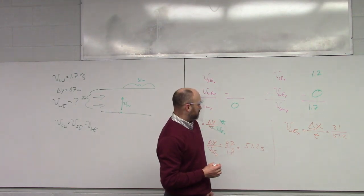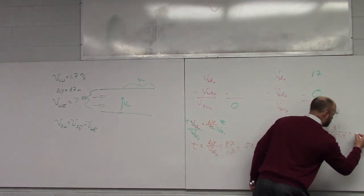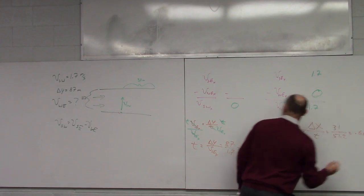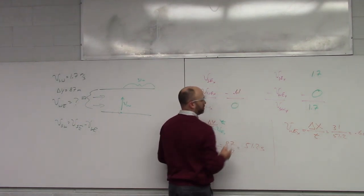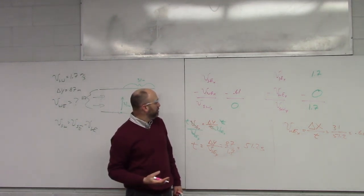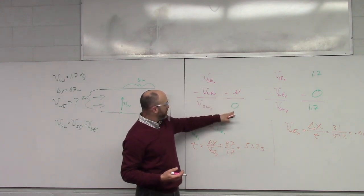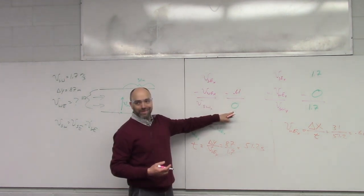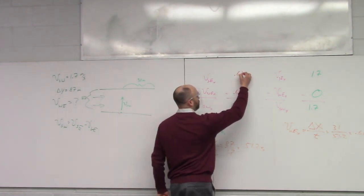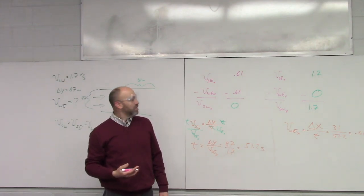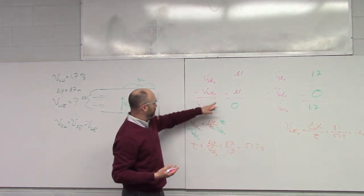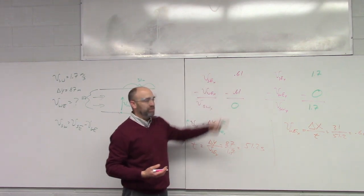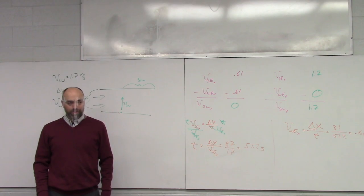We know delta-x from Earth's perspective is 31 m, and we know time is 51.2 s. What velocity is this? The current is pushing her — this is the velocity of water in the x-direction. So water velocity equals 31 over 51.2, which is 0.61 m/s. Something minus 0.61 equals zero, so the swimmer's x-velocity relative to water is 0.61. That makes sense — the water is what's pushing her downstream.